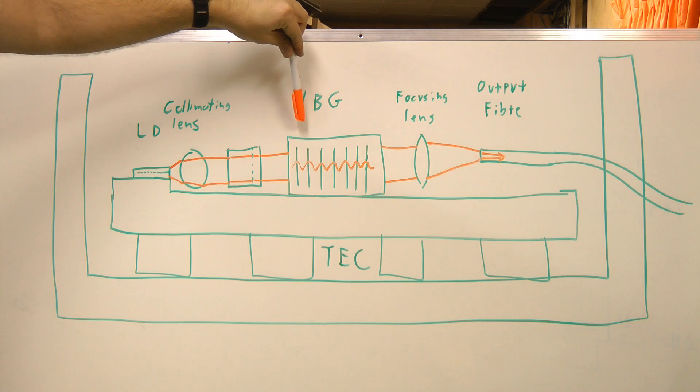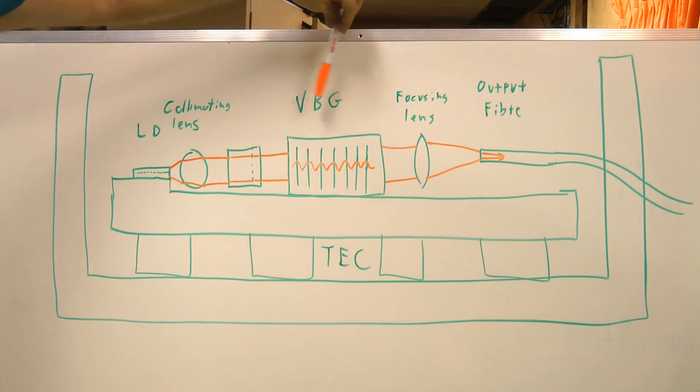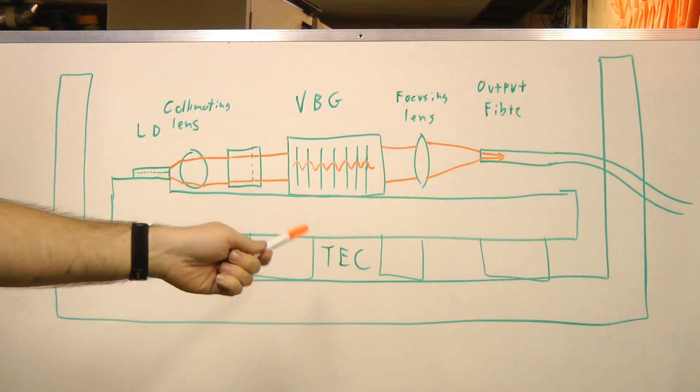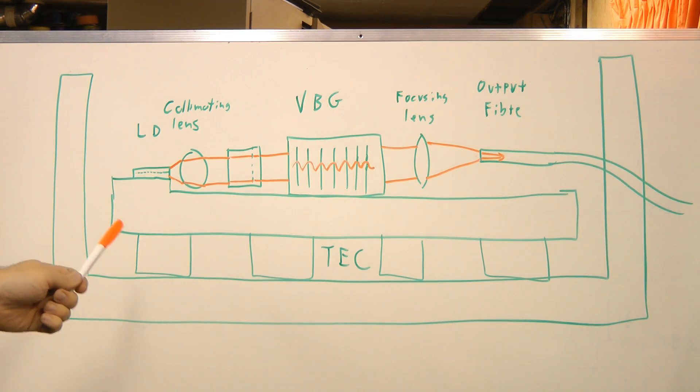And since this is slightly transmissive, or somewhat transmissive at the wavelength desired, that beam then exits, and that is a much narrower wavelength peak than you would get if it was just the laser diode by itself.